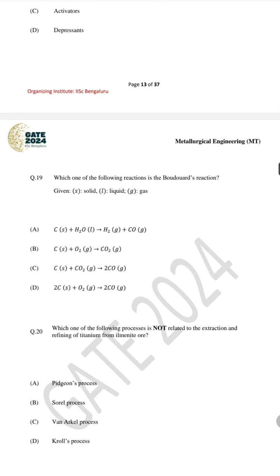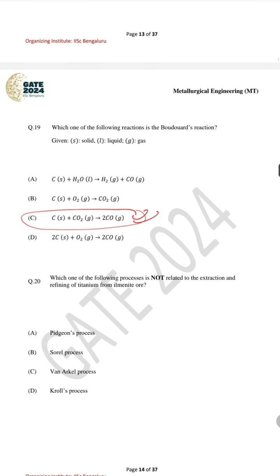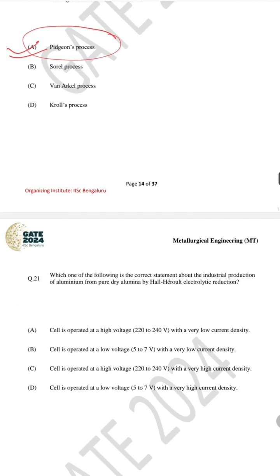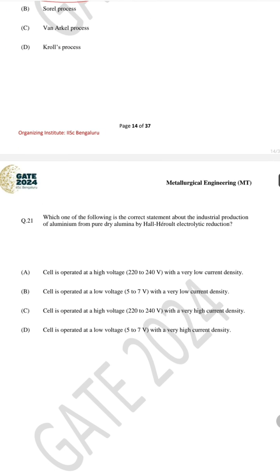For question number 20, which one of the following processes is not related to the extraction and refining of titanium ore, the correct answer is A — the Pidgeon process, which is used for the extraction of magnesium.